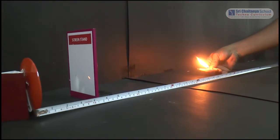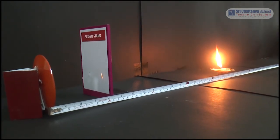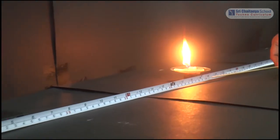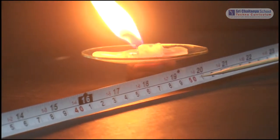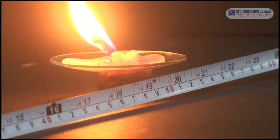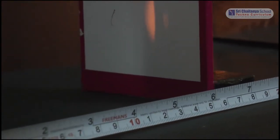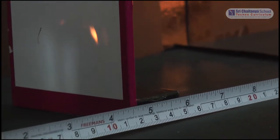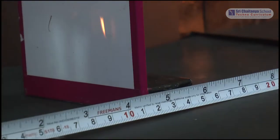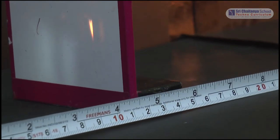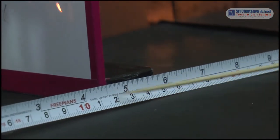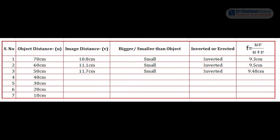Now move the object a little forward and keep it at the 50 cm mark. The object is placed at 50 cm. Again trace the image by adjusting the screen back and forth until we get a sharp image on the screen. In this case, we get the image at nearly about 11.7 cm. Object distance 50 cm, image distance 11.7 cm, and the focal length is 9.48 cm from the calculation.